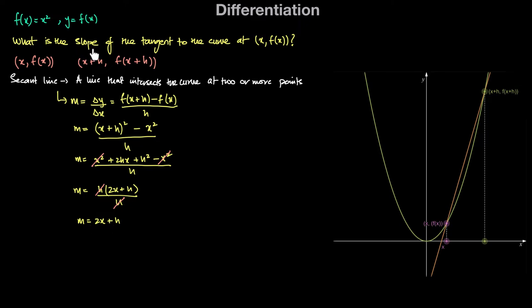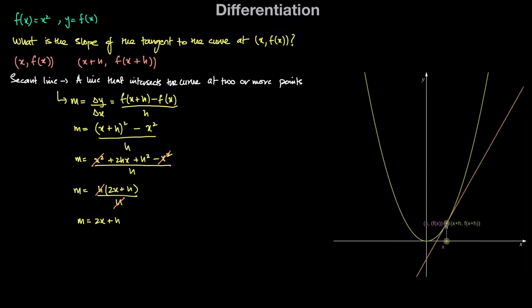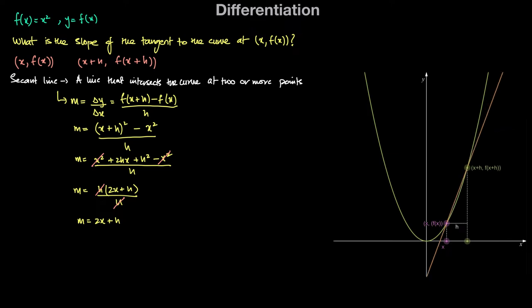So we found the slope of the secant line. But our initial question was: what is the slope of the tangent to the curve at the point (x, f(x))? We can see that h is the horizontal distance between the points. As the point on the right moves closer to the point on the left — as h decreases — the slope of the secant line approaches the slope of the tangent. As h gets closer and closer to zero, the secant slope approaches the tangent slope.